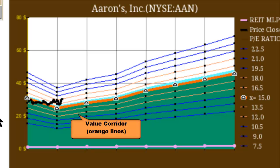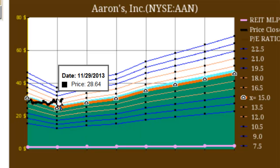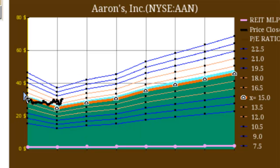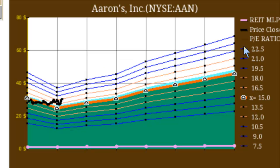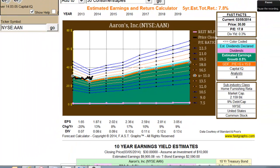Anytime the stock price is within these orange corridors, it would theoretically be at a reasonable value. If it's within the two above, as it is with Aaron's, you can argue that it's moderately fully valued to even slightly overvalued. If you saw the price at the two bottom orange lines, you can argue that the stock was significantly undervalued. All of that, of course, is based on the consensus estimates for this year, next year, and the three-to-five-year period following. The point is we are trying to provide a range of reasonableness.